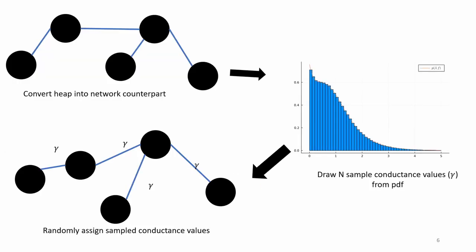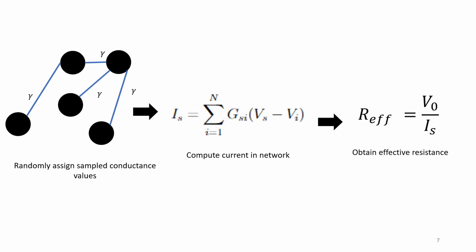We then assign each edge of the network a conductance value that is drawn from a probability distribution function. Once all the edges have been assigned conductance values, we compute the current in the network and obtain the effective resistance.